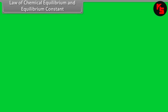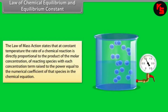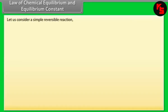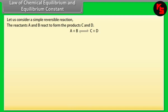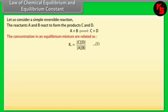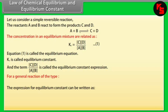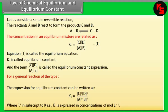Law of Chemical Equilibrium and Equilibrium Constant. The law of mass action states that at constant temperature, the rate of a chemical reaction is directly proportional to the product of the molar concentrations of reacting species, with each concentration term raised to the power equal to the numerical coefficient of that species in the chemical equation. For a reversible reaction where reactants A and B form products C and D, the equilibrium constant Kc is expressed in concentration units of mol/L. If Kc is the constant for the forward reaction, then Kc' for the reverse reaction equals 1/Kc.